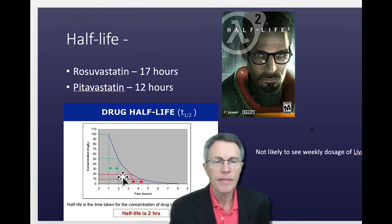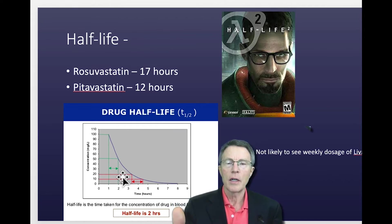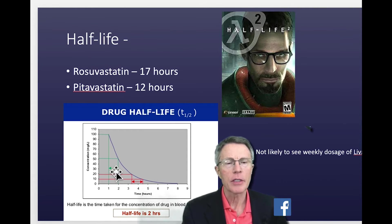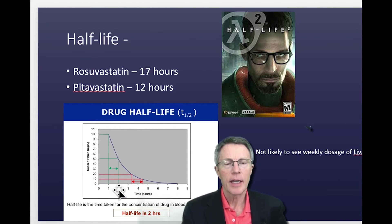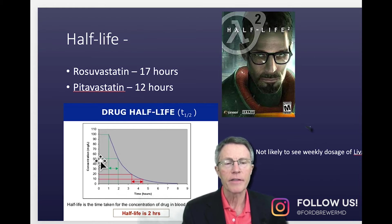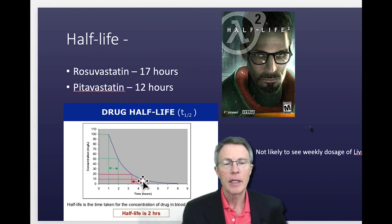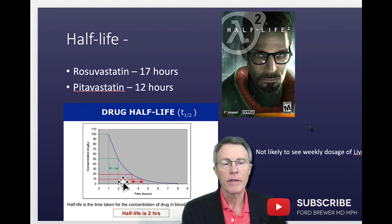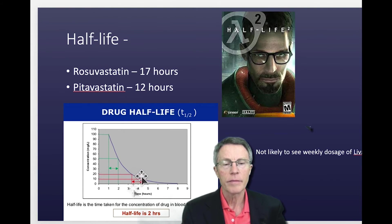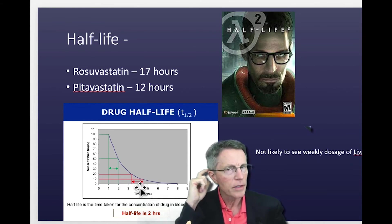You don't tend to excrete a drug at a constant fixed amount — it's based on concentration. Here's an image that helps illustrate this. The half-life on this drug is 2 hours, so at 2 hours it's gone from 100 down to 50, and at 4 hours it's gone from 50 down to 25. Here's another drug: at time zero it's at 20, and one hour later it's at 10. Hopefully that helps you understand what half-life is.